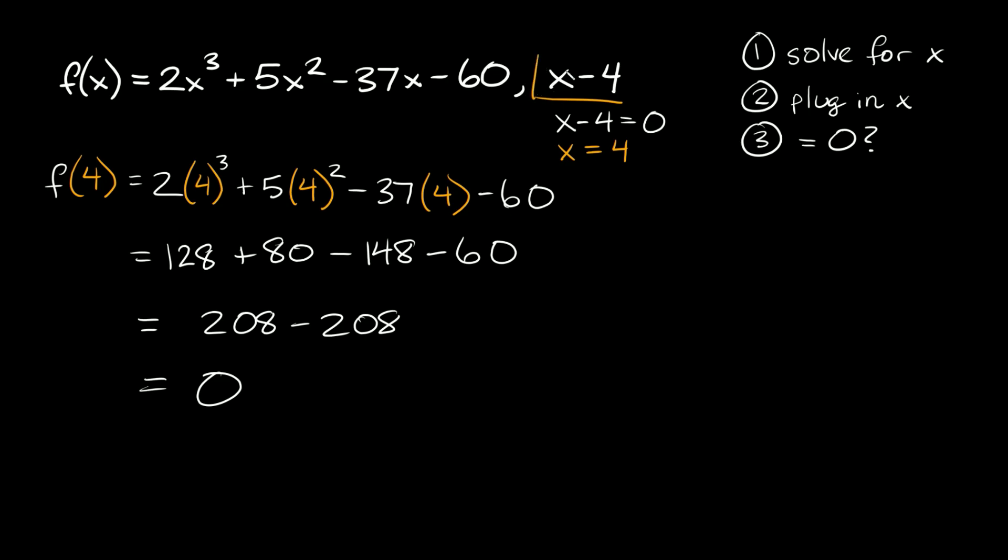...then that means that this binomial, the x - 4, is a factor of this polynomial function. If you plug in your x value and you get anything other than 0, then that would mean your binomial is not a factor of the function. But here we obviously did get 0, so x - 4 definitely is a factor of this polynomial. So that's the first way that we can solve these.